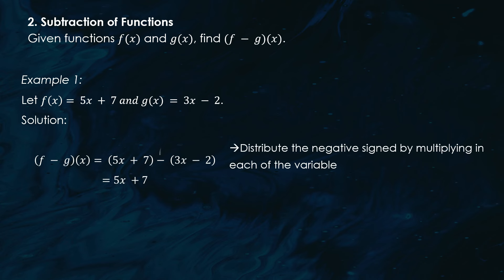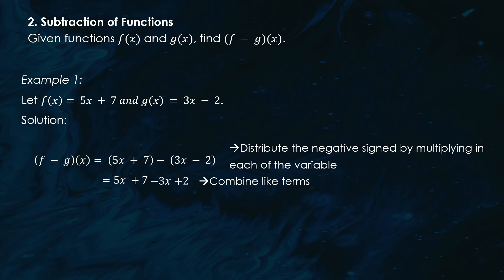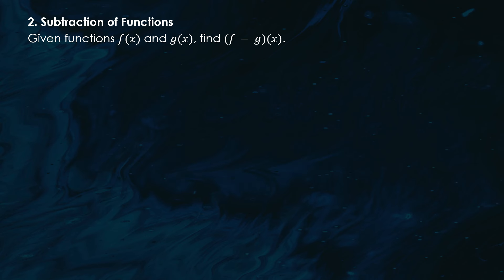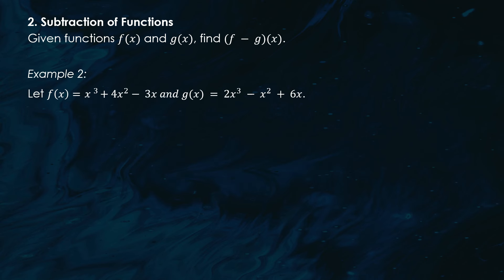Next up: subtraction. This works almost exactly like addition, except we're subtracting the functions. If f(x) = 5x + 7 and g(x) = 3x − 2, then (f − g)(x) = 5x + 7 − (3x − 2). The key trick is to distribute the negative sign, then combine like terms.